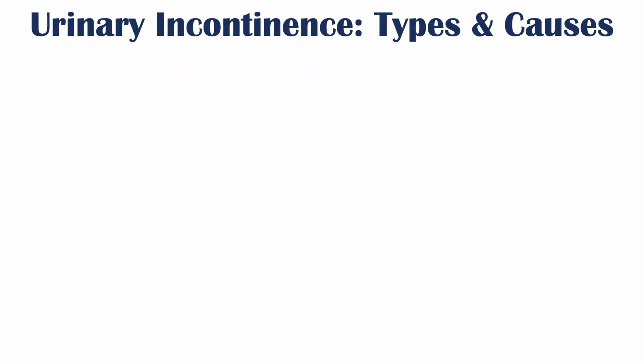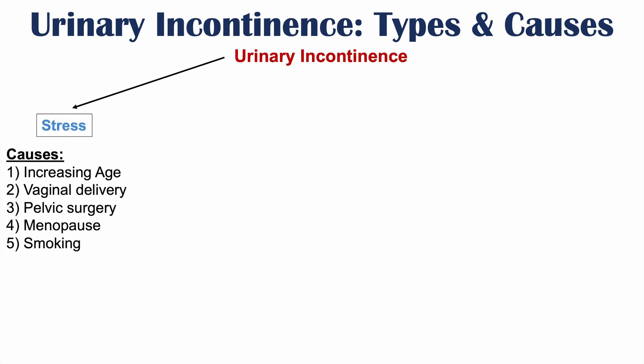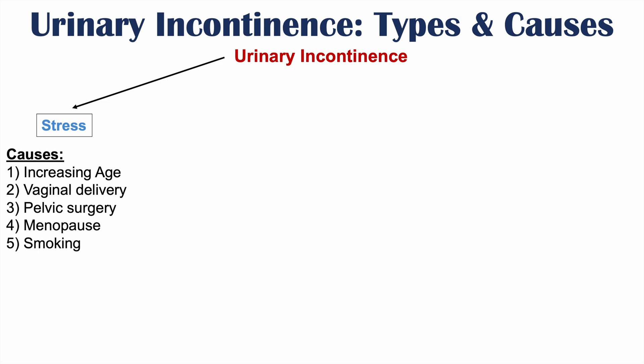Let's talk about the types of urinary incontinence in more detail along with the causes of each. Stress incontinence is due to a weakening of muscles that support the pelvis and pelvic structures. These muscles can weaken over time with increasing age. Another cause or risk factor is vaginal delivery, which causes weakness and stretching of those supportive pelvic muscles, leading to decreased ability to control bladder emptying or voiding.